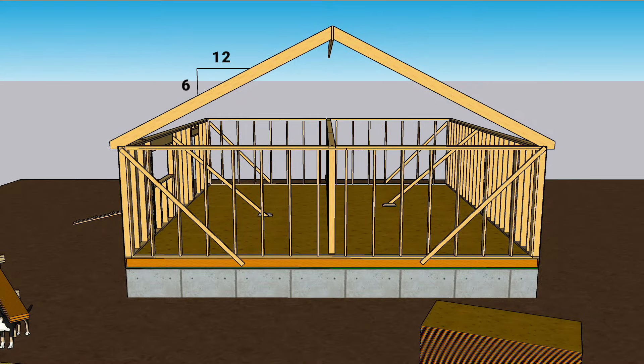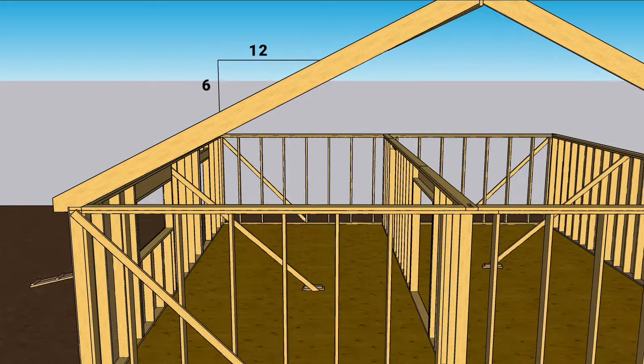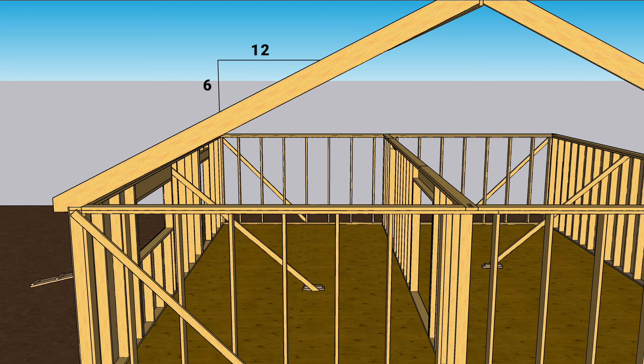Pitch is shown on the plants and is indicated as a fraction, usually with 12 being the denominator. The first number is the rise, the second is the run. So a 6-12 pitch rises 6 inches for every 12 inches it runs.